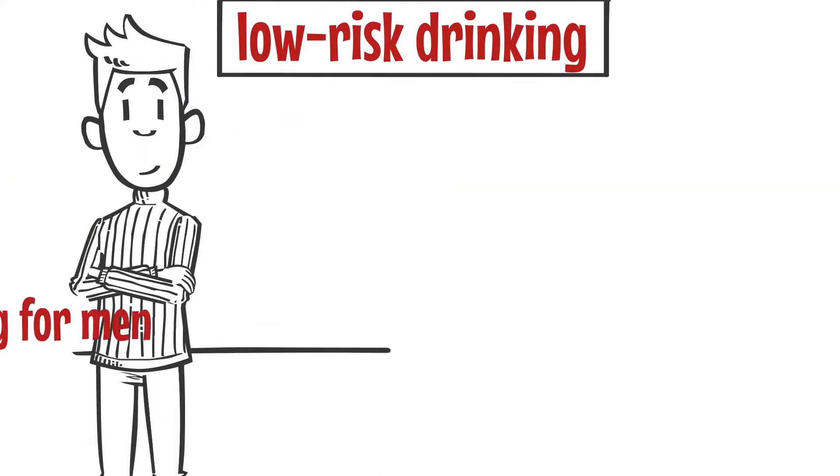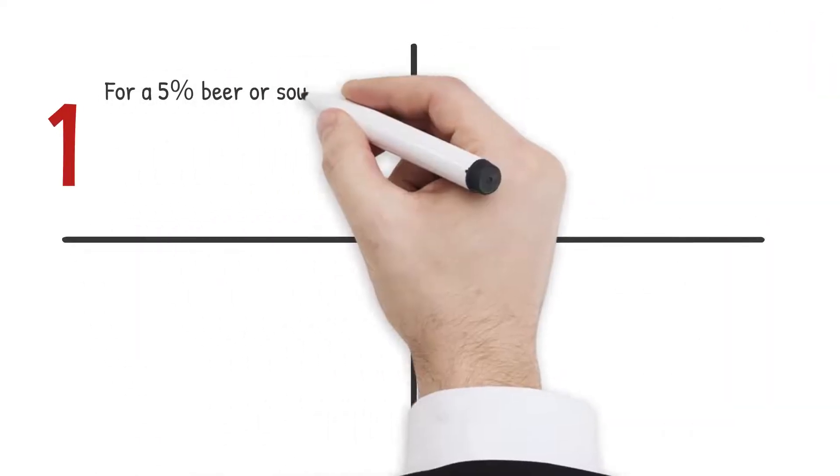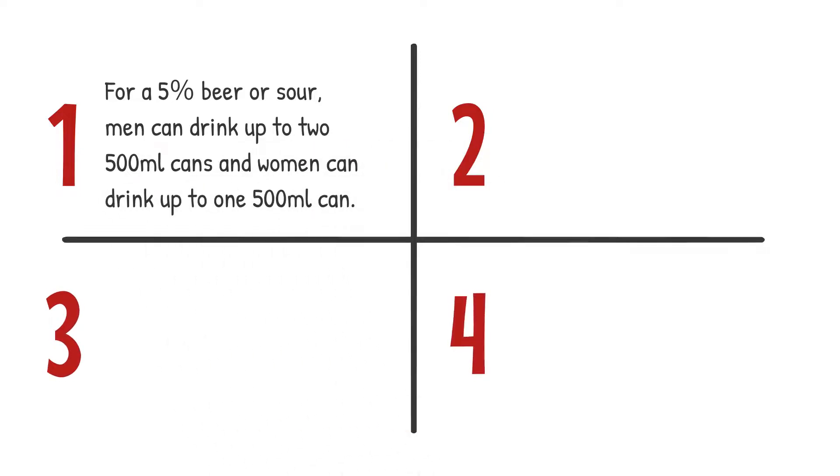WHO defines low-risk drinking as a daily alcohol consumption of up to 40g for men and 20g for women. For example, for 5% beer or sour, men can drink up to two 500ml cans and women can drink up to one 500ml can.